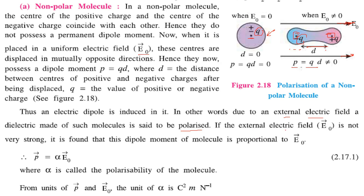If the external electric field E₀ is not very strong, it is found that the dipole moment of the molecule is proportional to E₀. So P = αE₀, where α is called the polarizability of the molecule. The unit of α is P divided by E₀, which works out to C²·m/N.